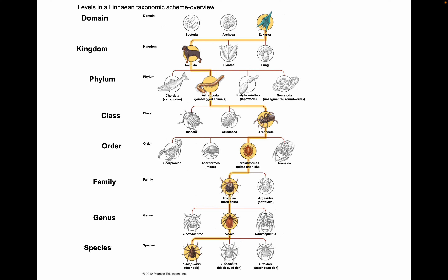Within every genus there's at least one species. We use the last two parts — the genus and the species — to make up the scientific name for each living organism. For humans, we're genus Homo, species sapiens, and our scientific name is Homo sapiens.